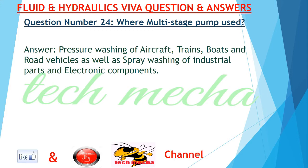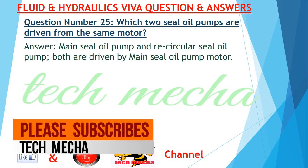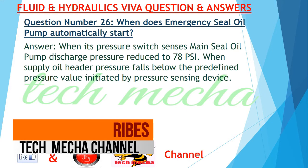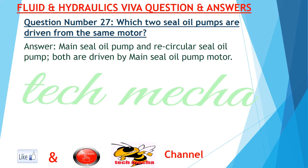Question number 25: Which two seal oil pumps are driven from the same motor? Answer: Main seal oil pump and recirculating seal oil pump — both are driven by the main seal oil pump motor. Question number 26: When does the emergency seal oil pump automatically start? Answer: When its pressure switch senses the main seal oil pump discharge pressure reduced to 78 psi, or when the supply oil header pressure falls below the predefined pressure value initiated by a pressure sensing device.